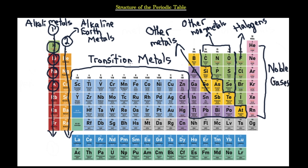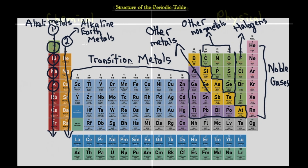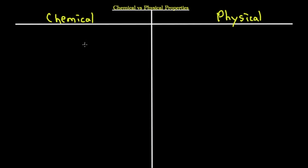These are the major subdivisions of the periodic table and how it is structured. They are grouped the way they are because they all exhibit similar trends — similar properties based on the number of protons, electrons, and neutrons they have. Although each element has a different number, the number they do have gives them similar properties, which we will see throughout this video. Now let's talk about the chemical and physical properties of each of these groups.